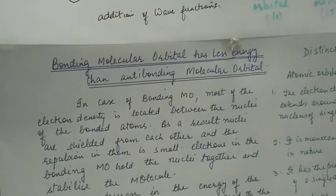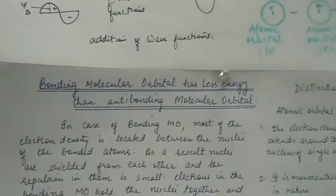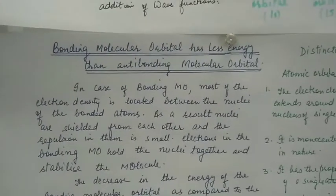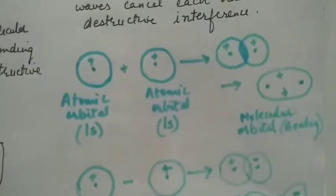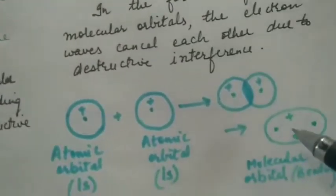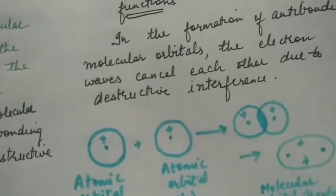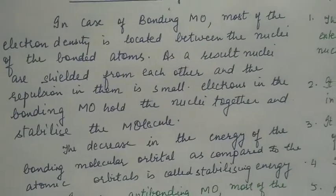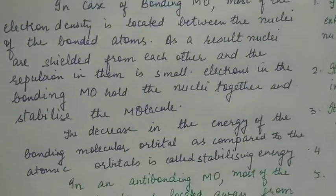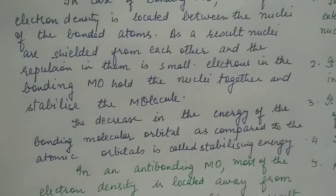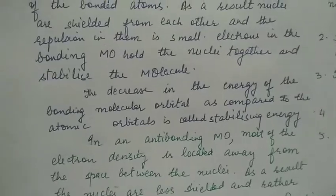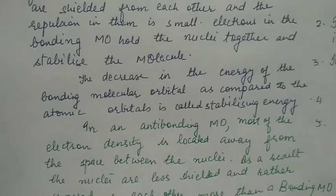The bonding molecular orbital has less energy than the anti-bonding molecular orbital. In the case of bonding molecular orbital, the electron density is more between the nuclei of the bonded atoms. As a result, the nuclei are shielded from each other and the repulsion between them is small.